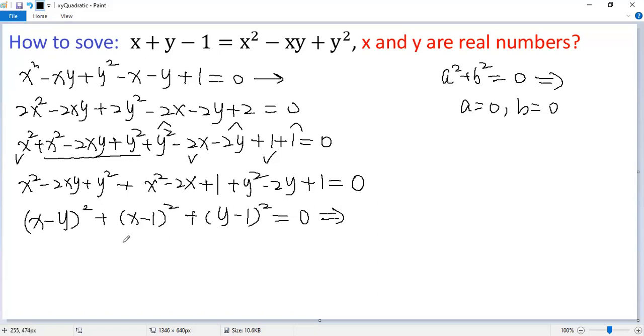So we get, because x, y are real numbers, we get x minus y must be zero, x minus one must be zero. Similarly, y minus one must be zero. So the unique solution would be x equals one, y equals one.